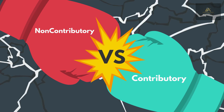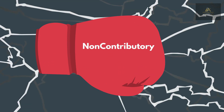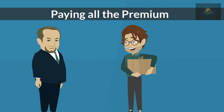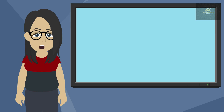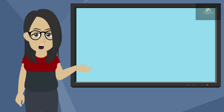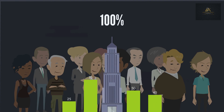Contributory versus non-contributory. Under a non-contributory plan, the employer pays all of the premiums. Insurance companies require that 100% of the eligible employees be included in the plan.